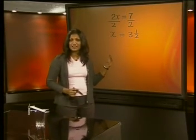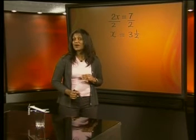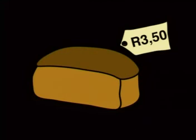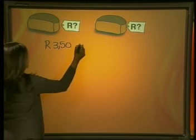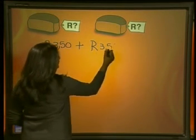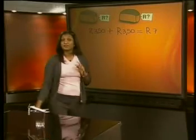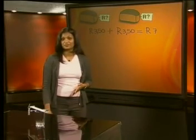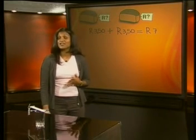Now what does the solution mean? Remember that x represents the price in rand, so one loaf of bread costs three rands and fifty cents. We should always check our answers: Sipo bought two loaves, so three rand fifty plus another three rand fifty gives a total of seven rands. This confirms our answer is correct. We showed that we can find the answer in many different ways.